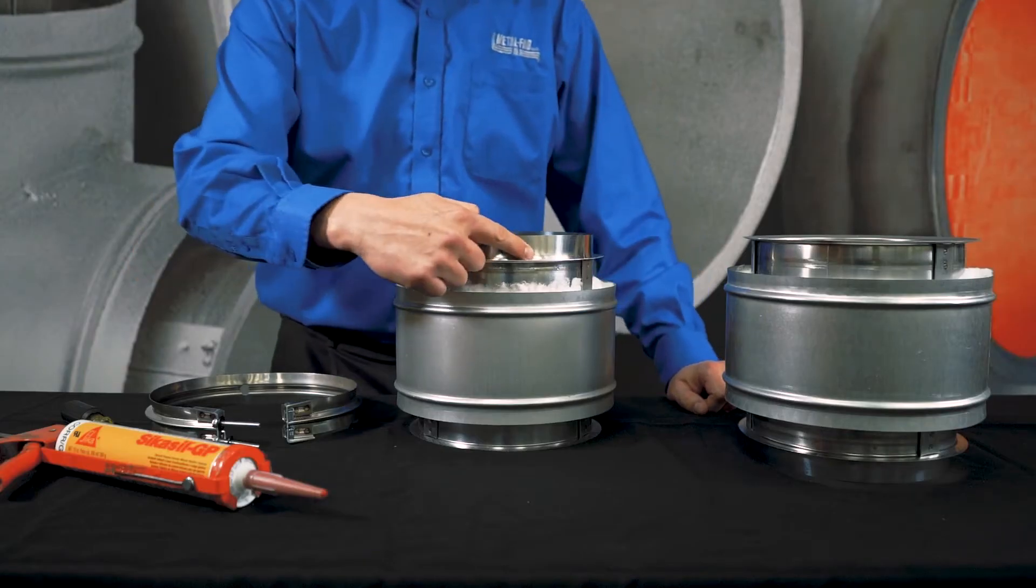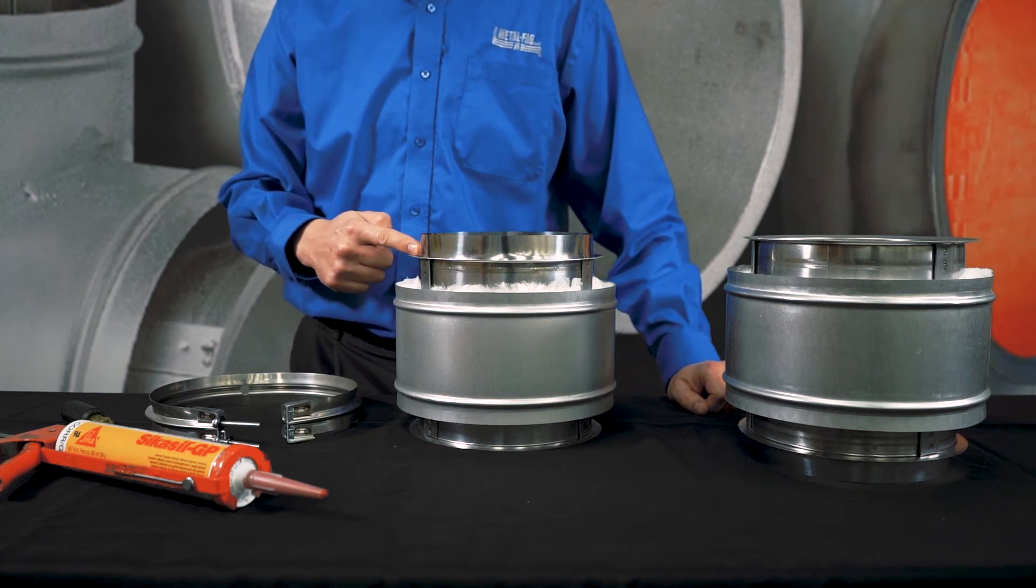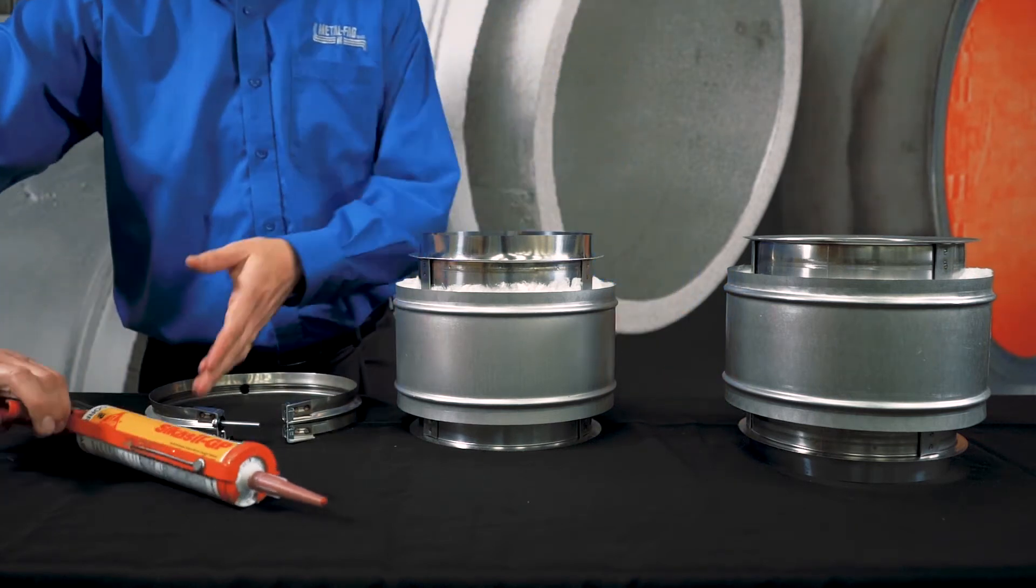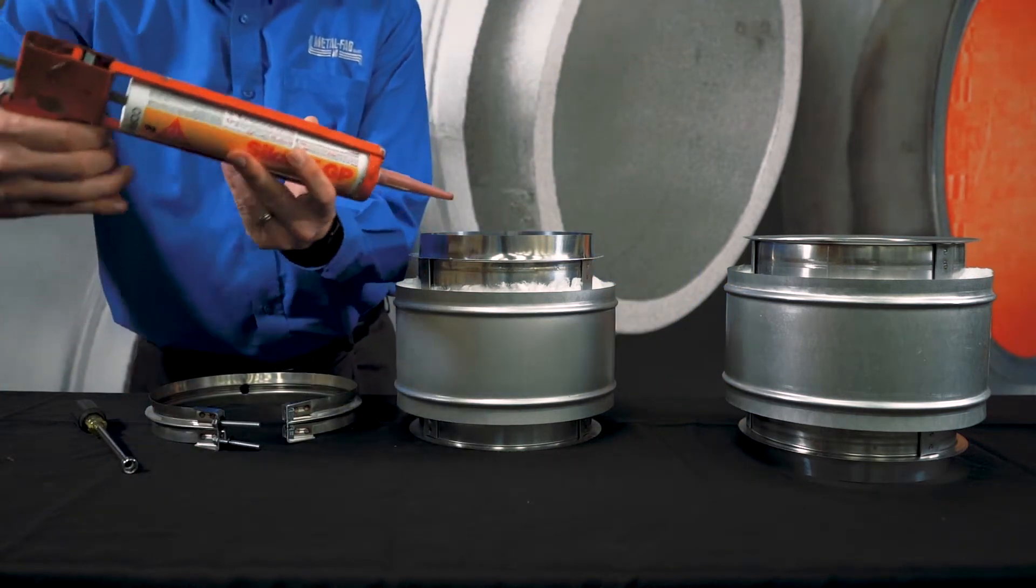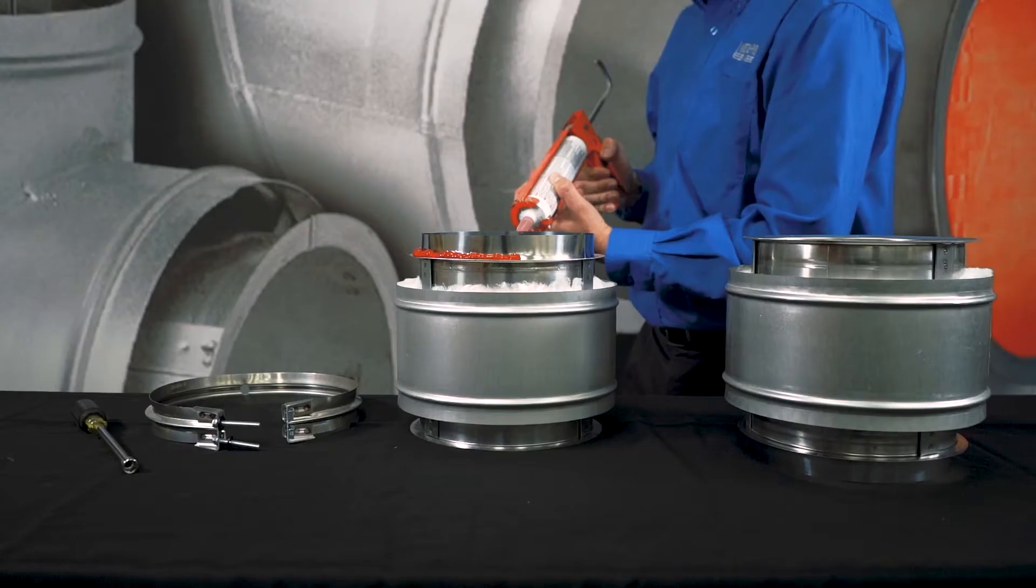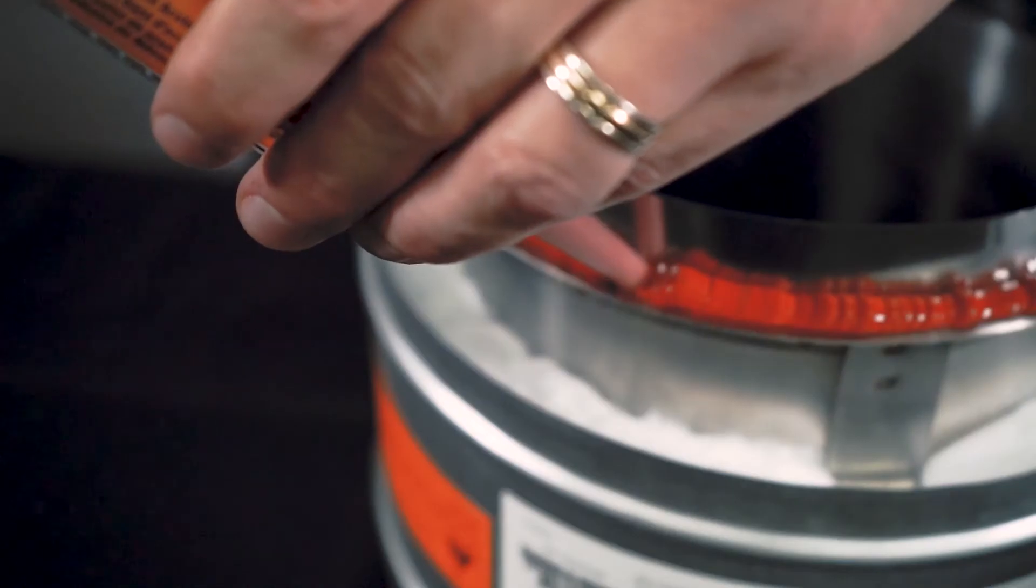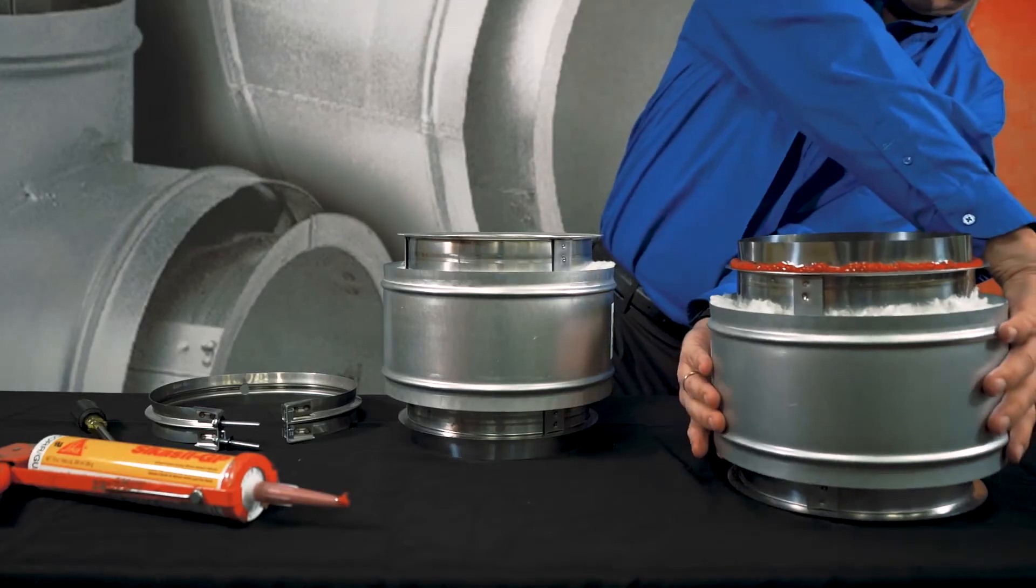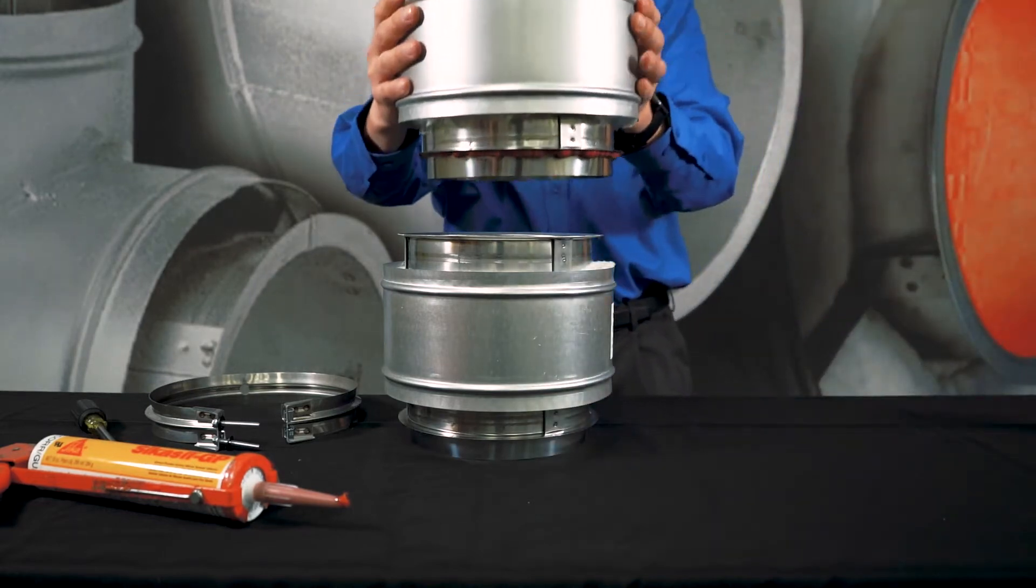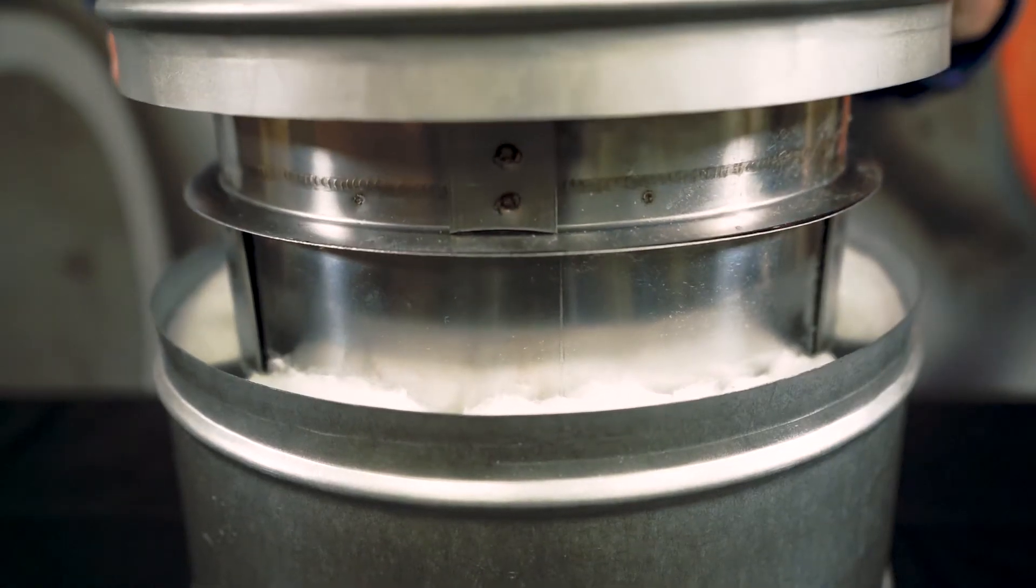Begin by inspecting the flange surfaces and cleaning with rubbing alcohol if contaminated with oil or dirt. Apply a continuous bead of the proper sealant in the corner of the sleeve and flange. Firmly join the two pieces of vent together.